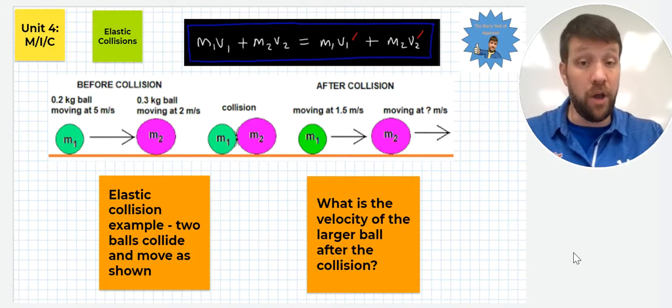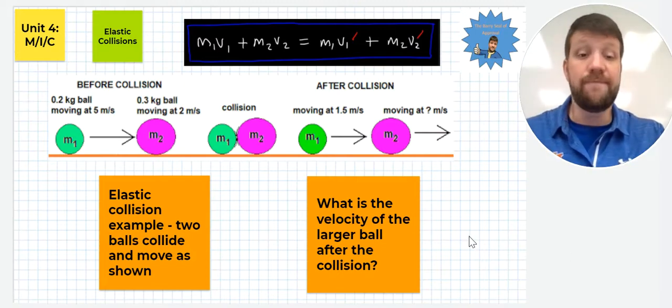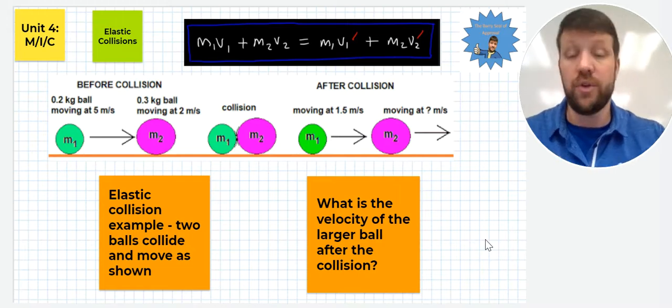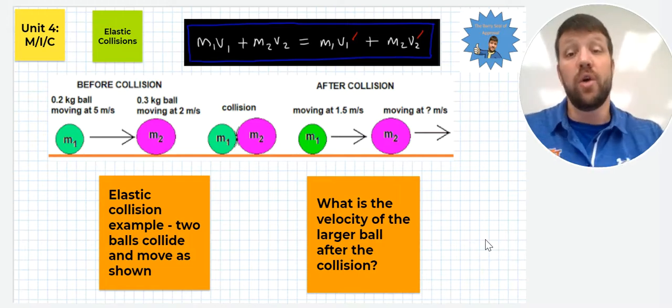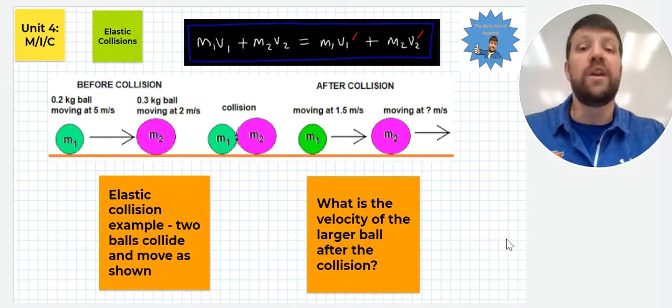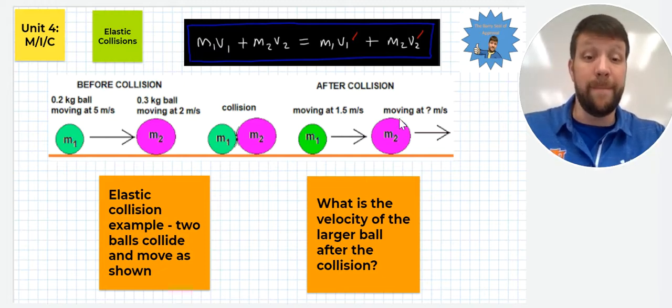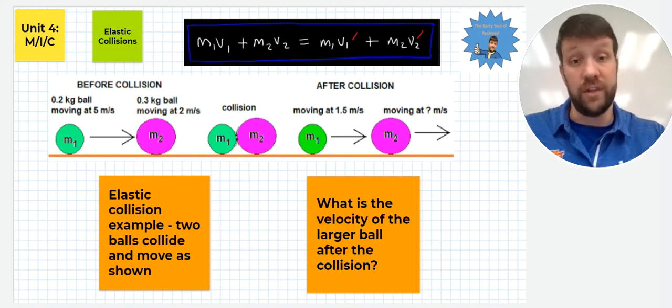Now that you've had a chance to pause and work that one out, we're going to have 4 and 1 third, 4.33, however you write that down, whether you're a fraction or a decimal person. We have 4 and 1 third meters per second for the velocity of mass 2 after the collision.